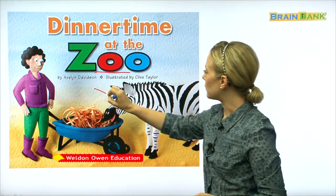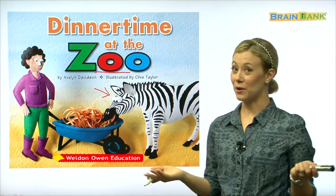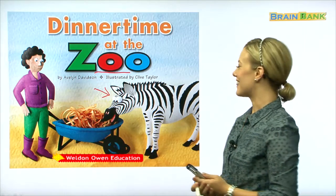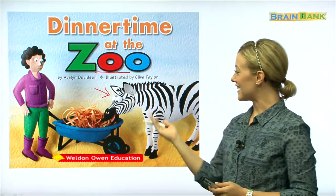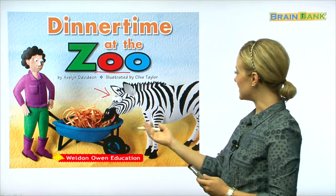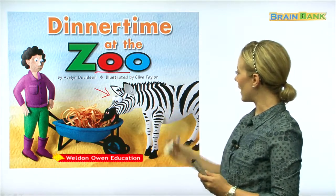What animal is this? That's right. It's a zebra. A zebra has black and white stripes.